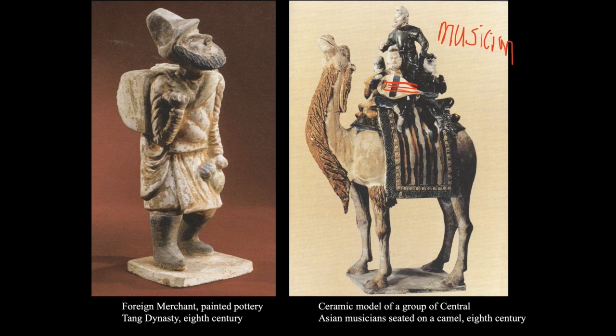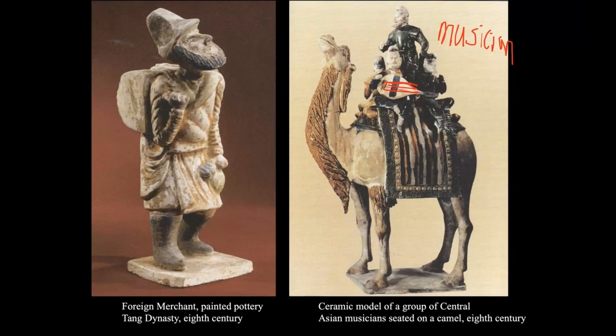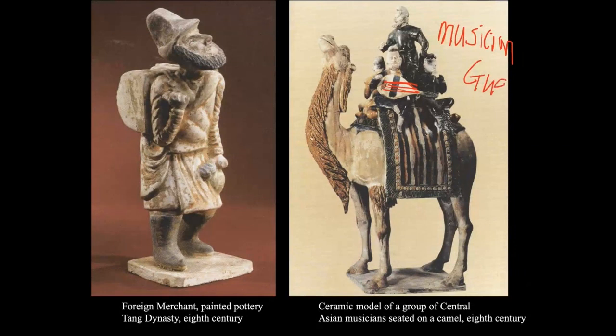In East Asia, we also have string instrument families, like the guqin. Some students actually studied guqin as a child, or the shamisen — a three-string Japanese string instrument. The whole string instrument tradition started to blossom in the eighth century in Central Asia.